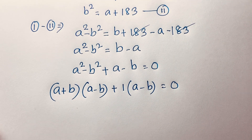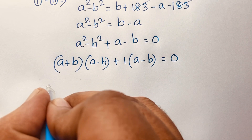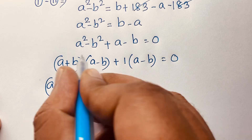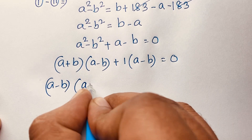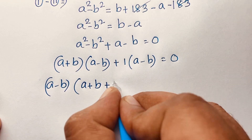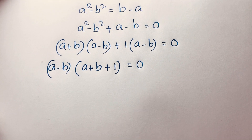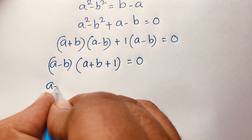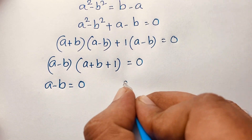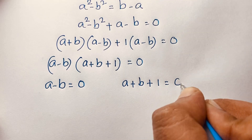Now, a squared minus b squared factors as (a plus b)(a minus b). And here positive 1 is common, so we get (a minus b)(a plus b plus 1) equals 0. Now we find either a minus b equals 0, or in the other case, a plus b plus 1 equals 0.